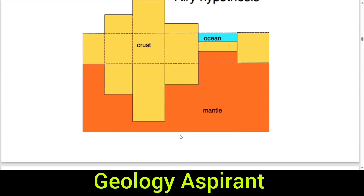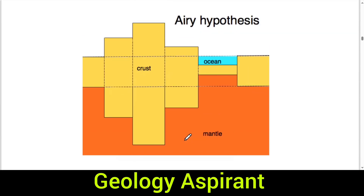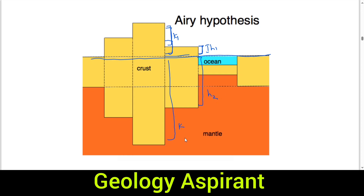In Airy's schematic model, if this is the surface and there is an elevation of height h1, you can see how its root penetrates below. Similarly for height h2 and k1 — each elevated block has a corresponding root penetrating deeper into the substratum.